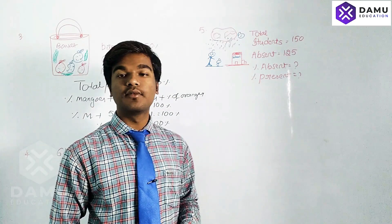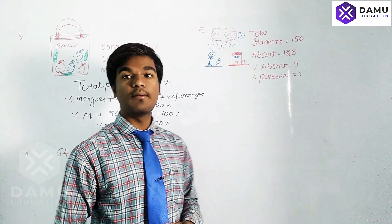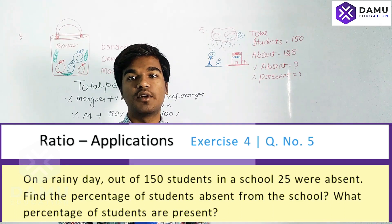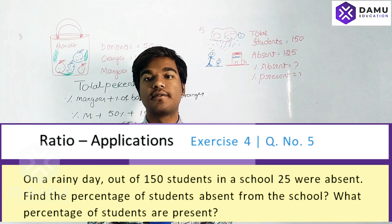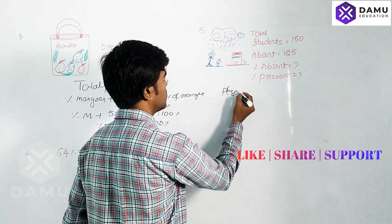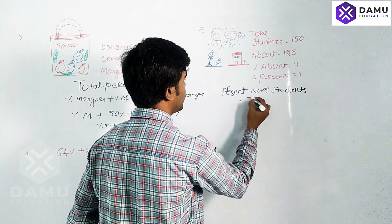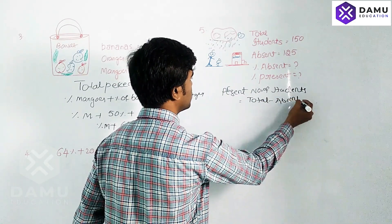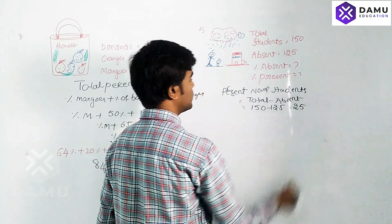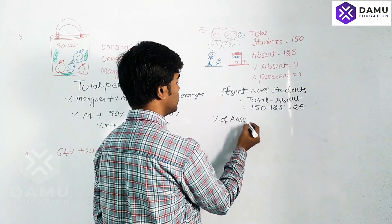Next question: On a writing day, 125 students out of 150 total students were absent. We need to find the absent percentage and present percentage. First, the number of present students equals total minus absent: 150 minus 125 equals 25 students present.